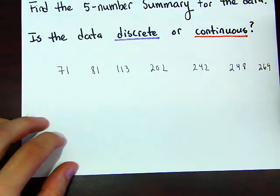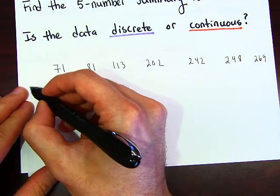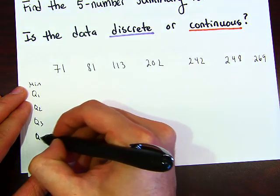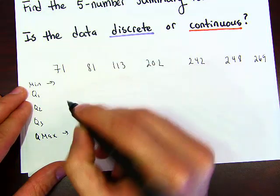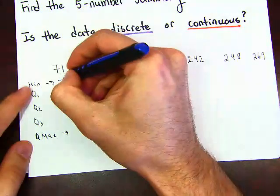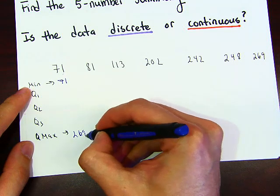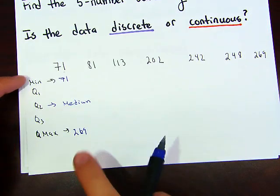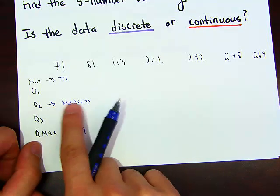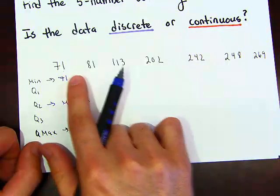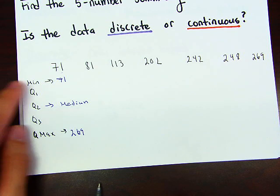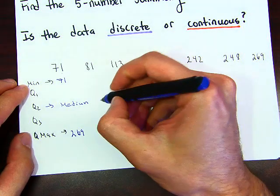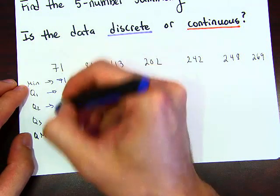Once the data values are in order, this problem is very straightforward. We have our minimum, Q1, Q2, Q3, and maximum. The minimum is 71 and the maximum is 269. To find the median — Q2 — notice that with seven data values you take three away from each side, so 202 is our median.